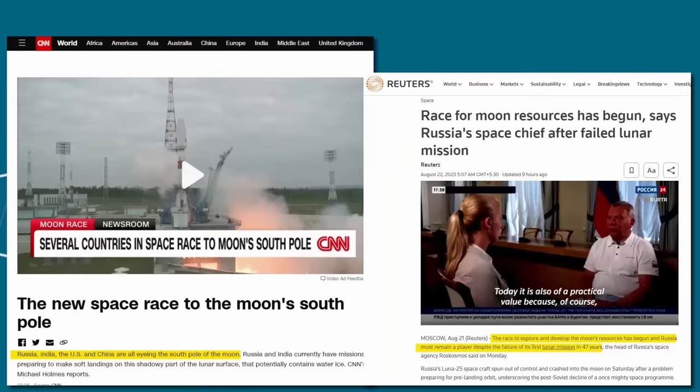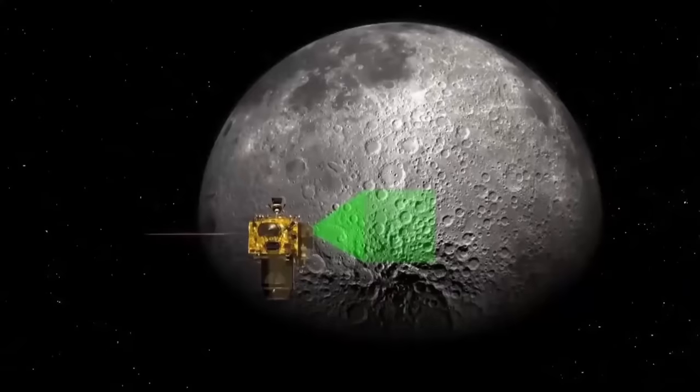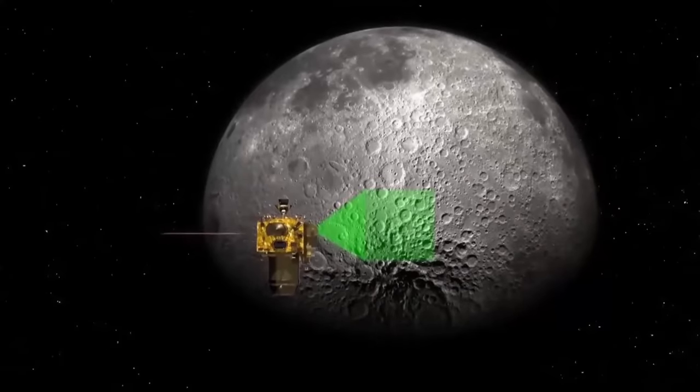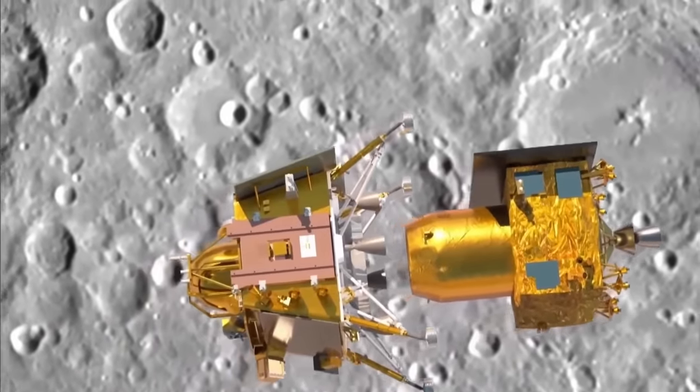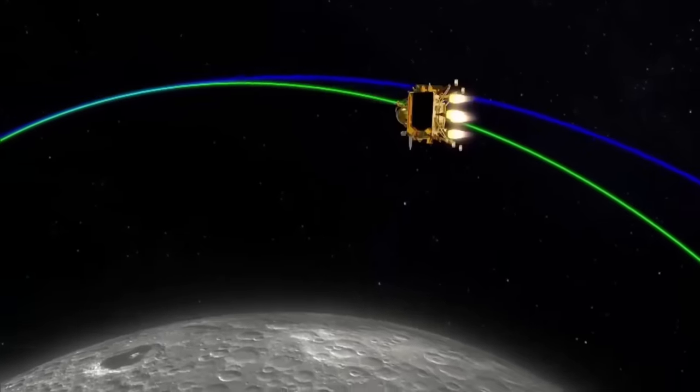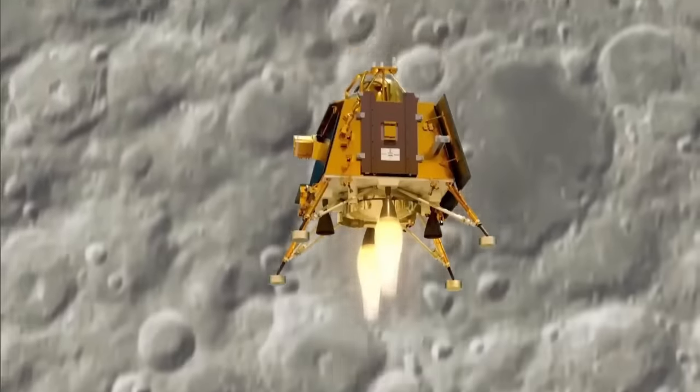The race to reach the Southern Pole of the Moon is going on in full swing, and it is likely that several more countries will join and succeed in the coming years. However, as of now, no country has ever made a soft landing on the Moon's South Pole. If Chandrayaan-3 successfully lands, then India will be the first country to do so, leaving behind major countries like the United States and China.